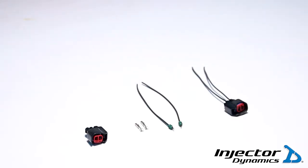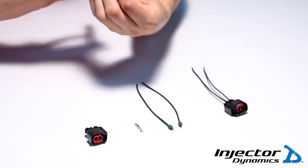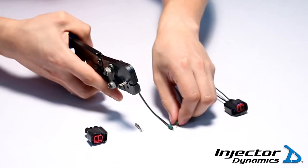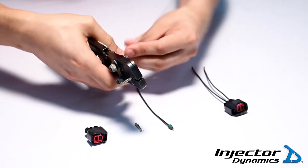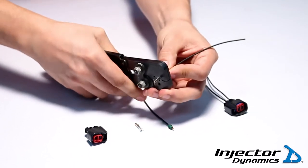Next, it's time to crimp the terminals onto the wire leads you have now installed the seals on. You'll take your crimpers, insert the terminals into the crimpers as shown. At this point, you're going to insert the wire lead into the terminal the correct distance and crimp the wire.